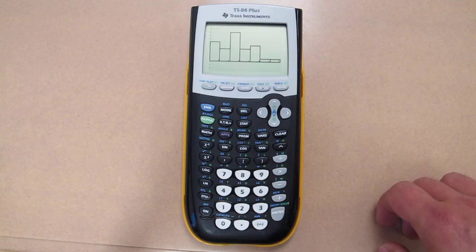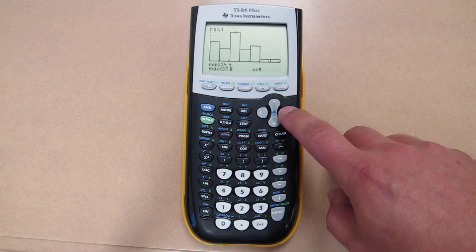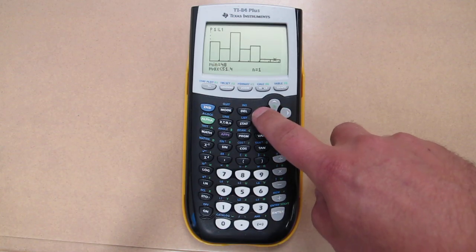There's your histogram. By pressing trace and scrolling from side to side, you can see the minimum and maximum for each class, as well as the frequency.